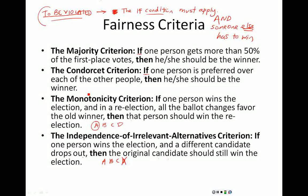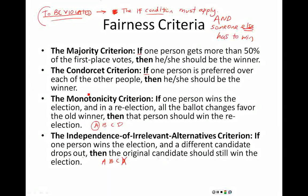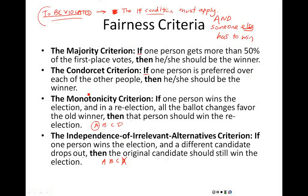As strange as it may seem, there actually does not exist a method to count votes that guarantees all these criteria will hold true in every single case. While they usually hold true, we can come up with examples of a single election where using different good ways to calculate the winner causes different people to win. In 1949, the economist Kenneth Arrow mathematically demonstrated that it was impossible for a democratic voting method to satisfy all four fairness criteria.